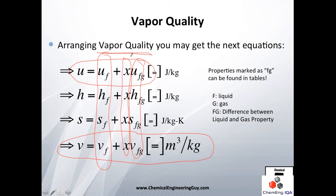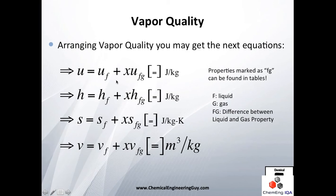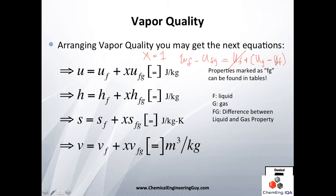This is important: if x equals zero, that means it's a pure liquid, so the vapor quality term drops out and you get just the internal energy of the fluid — which makes sense. If x equals 1, you use u_f plus u_fg, and since u_fg equals u_g minus u_f, the u_f terms cancel and you get only u_g, meaning the mixture is 100% vapor.